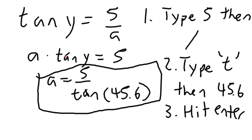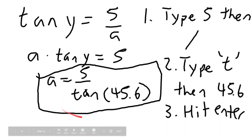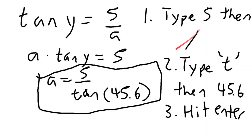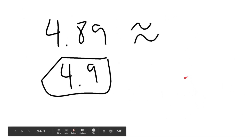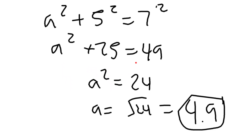Now let's tackle tan y equals 5 over a. Multiply both sides by a and divide both sides by tan y to isolate a, giving a equals 5 over tan y. Since y is 45.6, type 5, then the divide sign (slash), then tan(45.6), and hit enter. This also gives us a result of about 4.9.